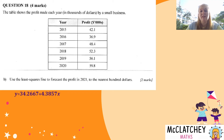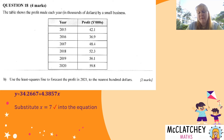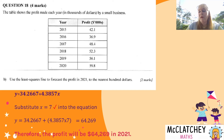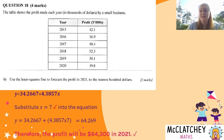Part b asks us to use the least squares line to forecast the profit for 2021 to the nearest hundred dollars. Since 2021 is the seventh year, we substitute x = 7 into the equation — correctly identifying x = 7 earns a mark. This gives us 64.269 thousand dollars. Converting to dollars we get $64,269, and rounding to the nearest hundred dollars gives a final answer of $64,300 for 2021.